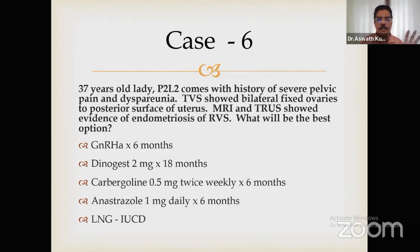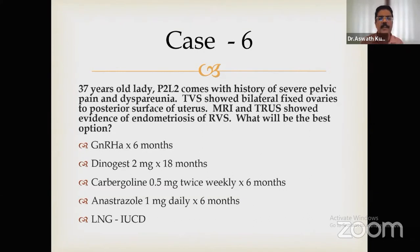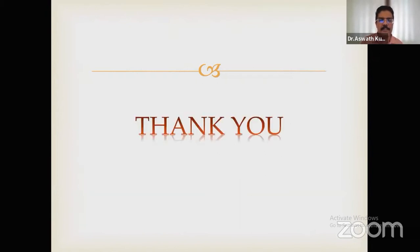Case 6: A patient with severe pelvic pain and dyspareunia, P2L2, bilateral fixed ovaries, evidence of endometriosis with a rectovaginal septum involvement. The patient was not ready for surgery — even hysterectomy with bilateral salpingo-oophorectomy had been considered. This is the only case where I gave anastrozole for six months and the results were excellent. These cases illustrate practical drug selection in real clinical scenarios.